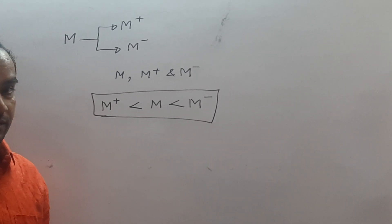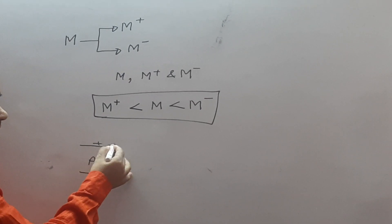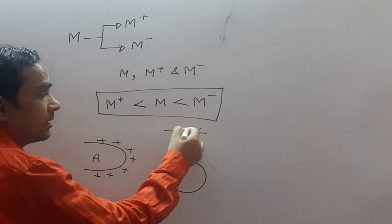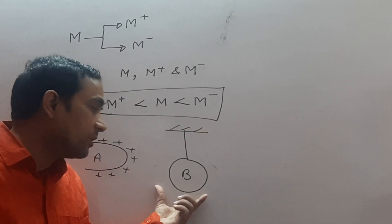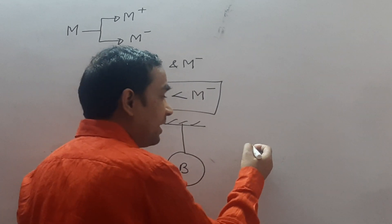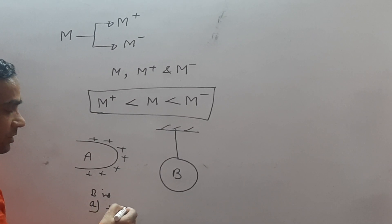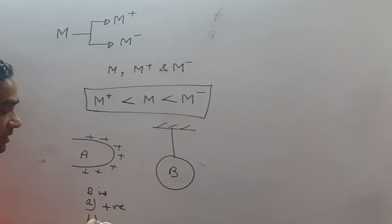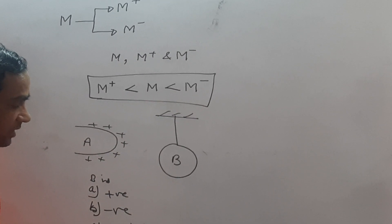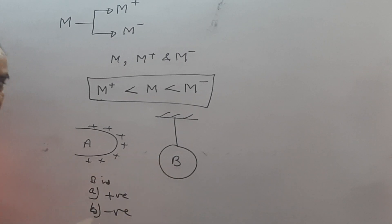Next question. A positively charged object A attracts object B. Then what can be predicted about charge of object B? Option A: B is positively charged, B is negatively charged, B is neutral. Option B: either negatively charged or neutral.